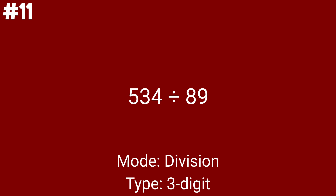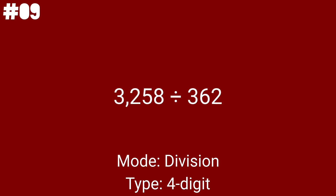534 divided by 89 is the last 3-digit division problem. After this one, we will move on to the final 10 division problems and move on to 4 digits again. 6704 divided by 4 — to divide by 4, halve the first number twice, meaning dividing by 2 for a total of 2 times. This will be the 10th to last problem but the first 4-digit division problem. 3258 divided by 362 is problem number 47, which has a 3-digit divisor.